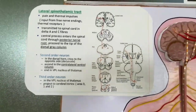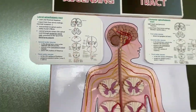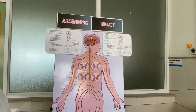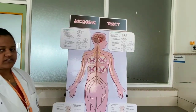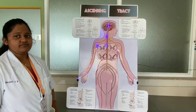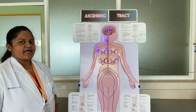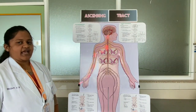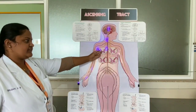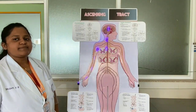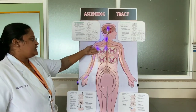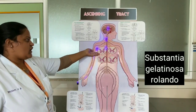Now we are going to study about the lateral spinothalamic tract. The lateral spinothalamic tract is formed by the fibers of second order neurons for the sensation of pain and temperature. It is situated at the lateral column towards the medial side near the grey horn. The lateral spinothalamic tract originates from the marginal nucleus and substantia gelatinosa of Rolando.